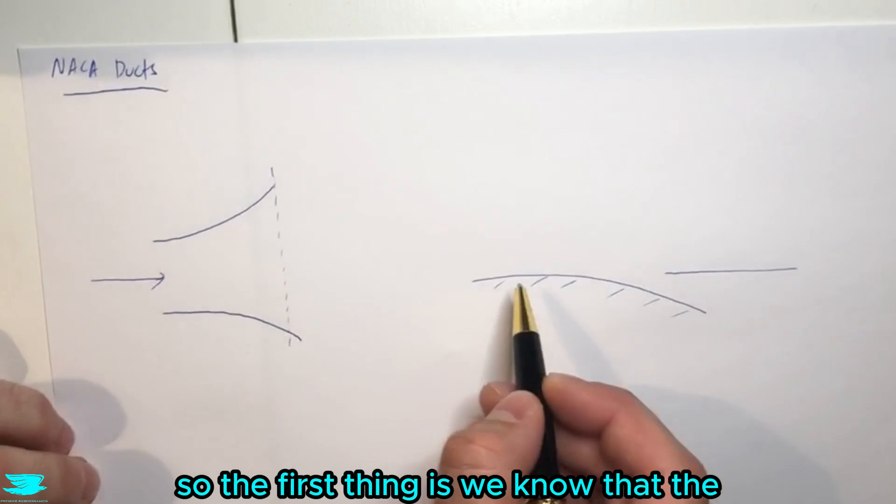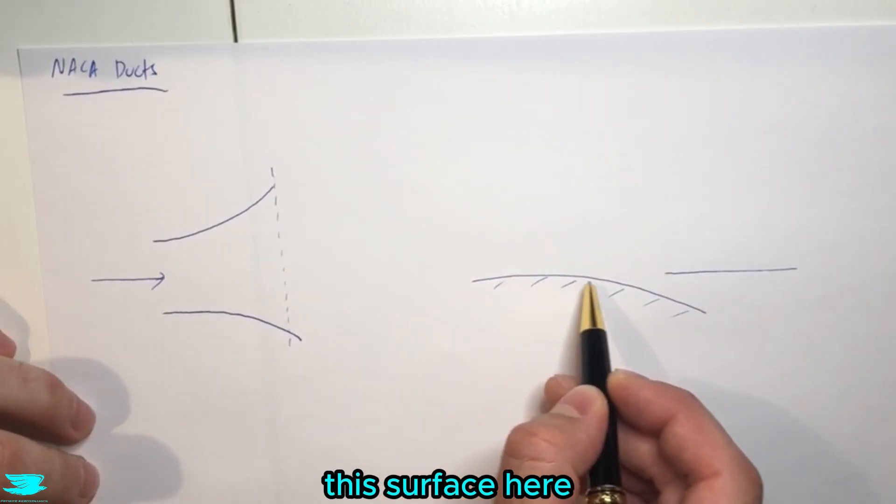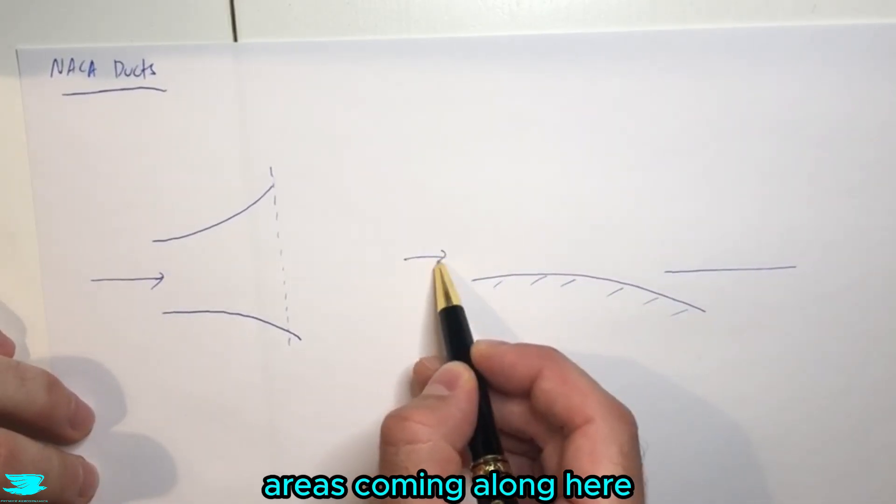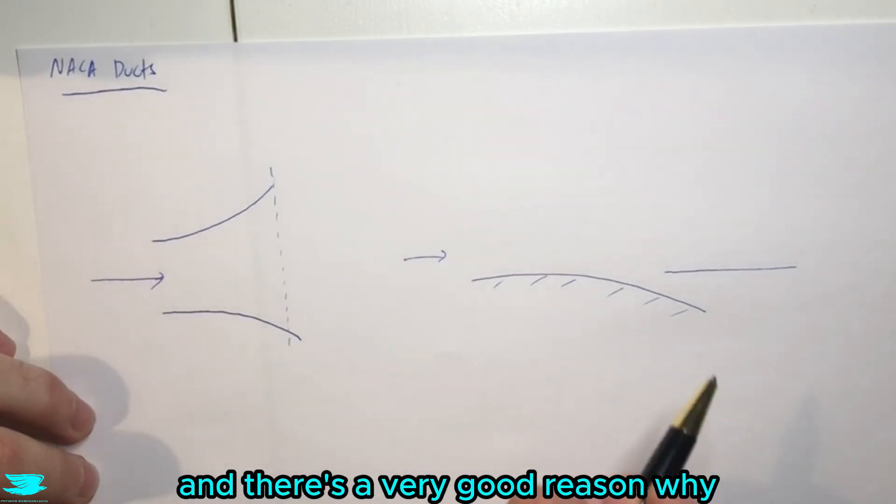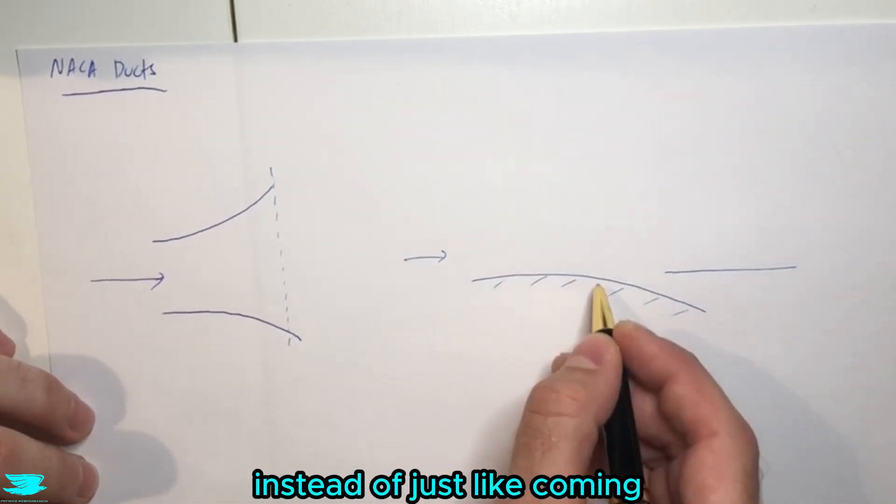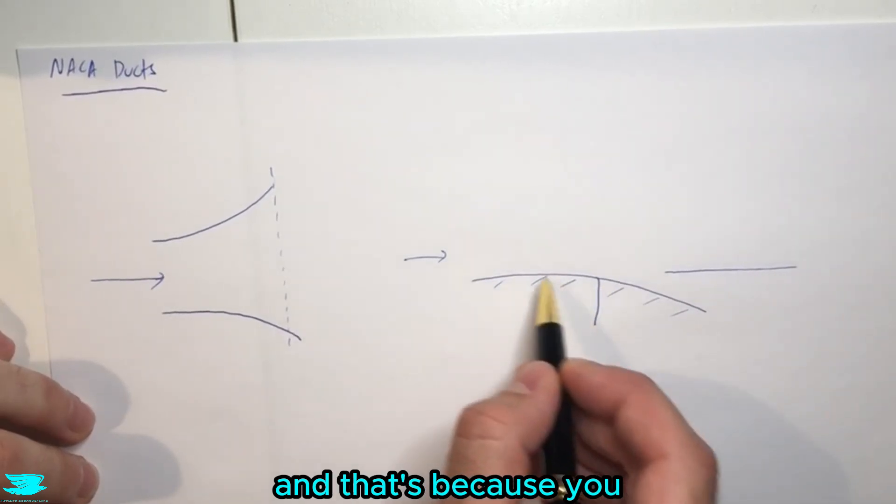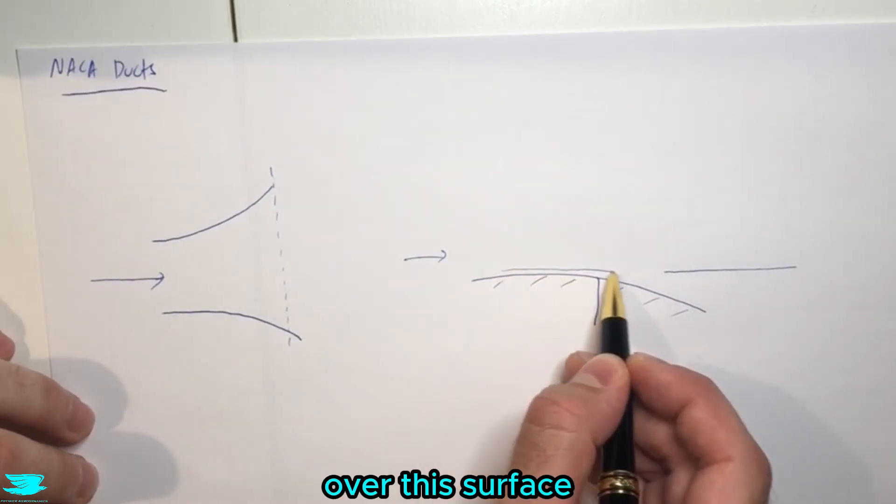So the first thing is, we know that this surface here, that comes down to the area coming along here, this surface curves down quite gently. And there's a very good reason why it curves down quite gently instead of just coming straight down like this, and that's because you want the flow to stay attached over this surface.